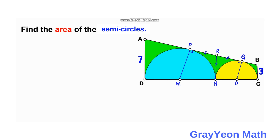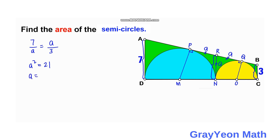Next, we focus on segments AD, RN, and BC. These three segments are actually in proportion. Since they are proportional, if we label RN as A, we can say that 7 over A equals A over 3. Cross-multiplying gives A squared equals 21, so A equals the square root of 21.